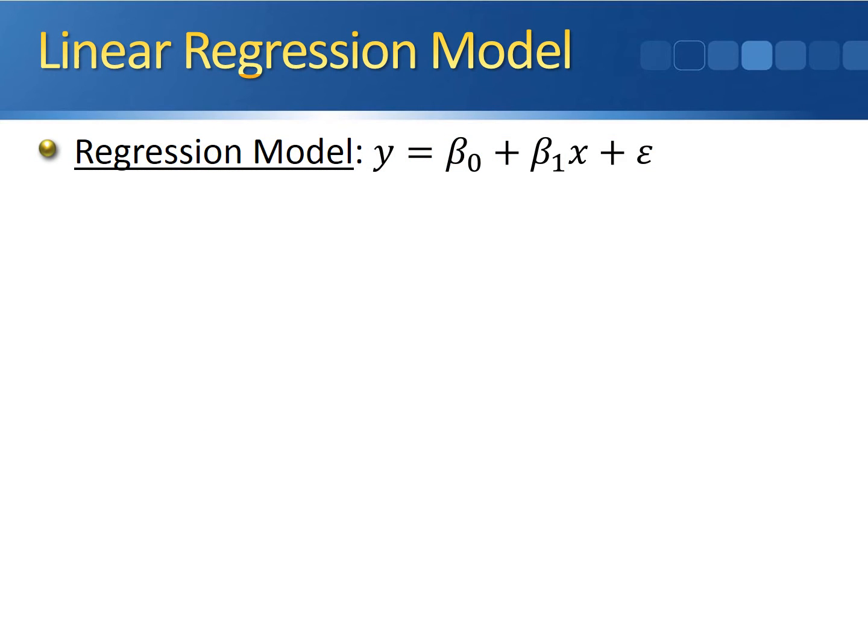We can now take this information about the parameters, beta0 and beta1, and formulate a regression model. The regression model is similar to the equation of the regression line, but there are a couple subtle differences. Our regression model has y on the left side of the equal sign instead of y hat. y is going to stand for the actual value of the response variable from the data.